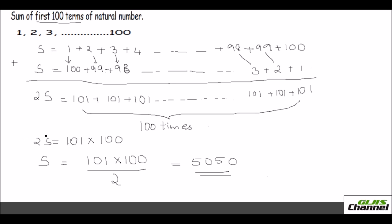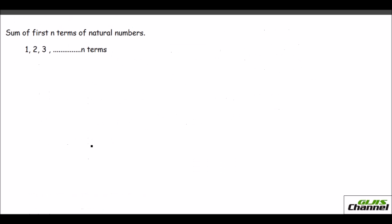Using this as a basis we can generalize finding the sum of n terms of natural numbers. The series is 1 plus 2 plus 3, going all the way, where the last three terms are n minus 2, plus n minus 1, plus n.